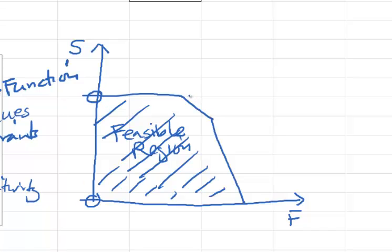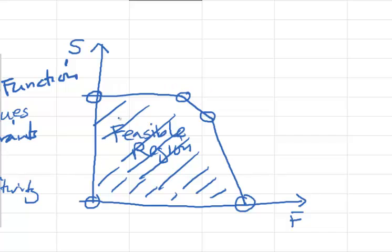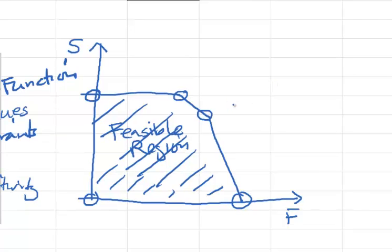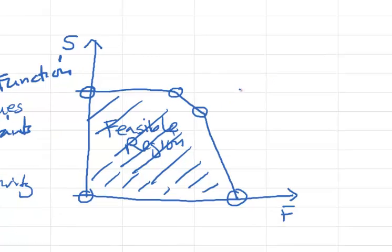With the graphical method, you draw the feasible region, which represents all feasible solutions. A mathematical theorem says that to find the optimal solution you only need to look at the corner points of the feasible region. You get the coordinates of the corners, calculate the profit at each corner by plugging in the coordinates, and take the one with the highest profit. We're not actually going to use this method since it's limited to problems with only two variables, but it's good to have a picture in mind. The simplex method the computer uses is basically doing the same thing — looking at corner points.